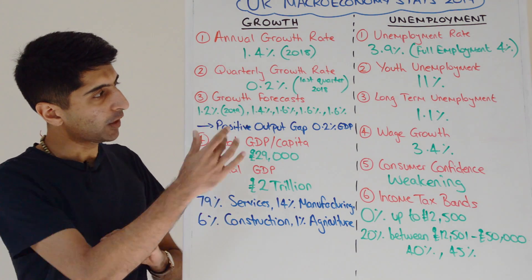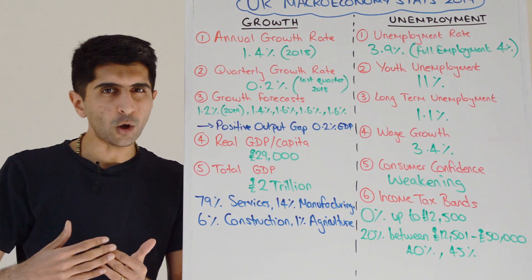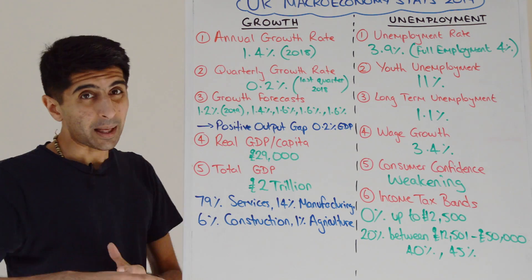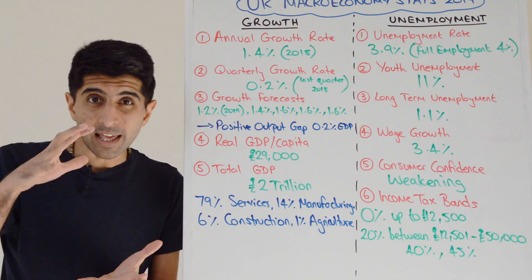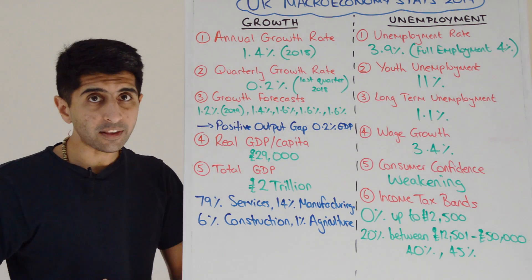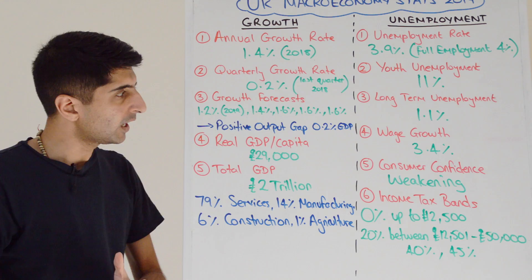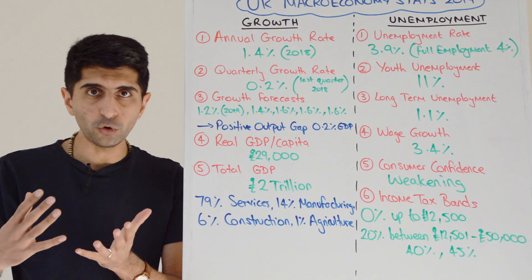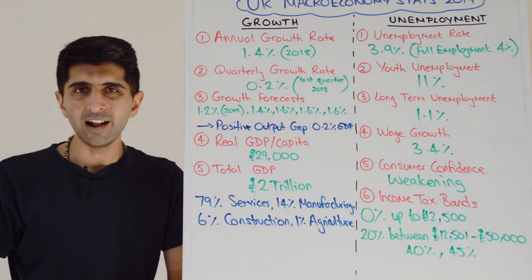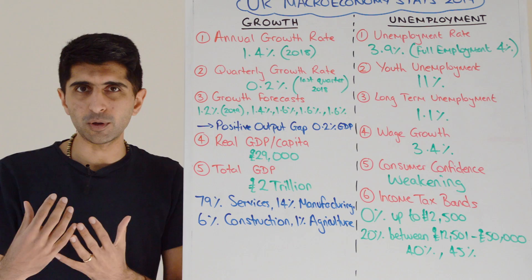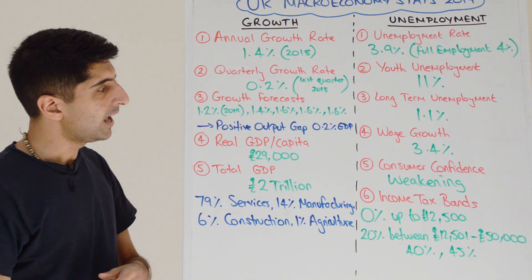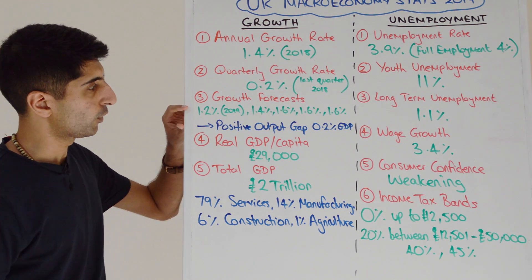Having said that, if we look at the forecast, economists don't expect there to be a recession this year. But you can see that Brexit really is slowing the economy down. In fact, growth forecasts are pretty bearish. The OBR is forecasting growth of only 1.2% this year, because this is the year we're officially leaving the European Union. All this Brexit mess is really impacting on growth.